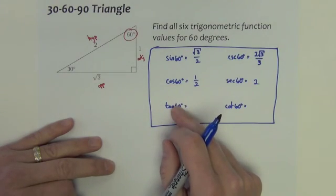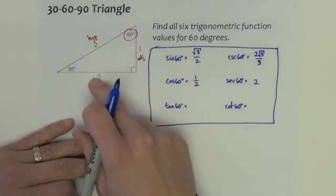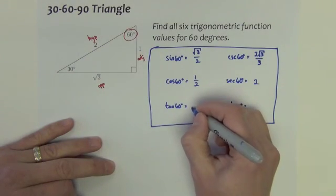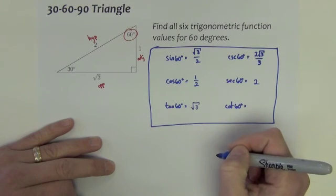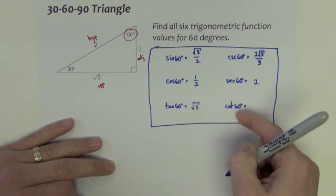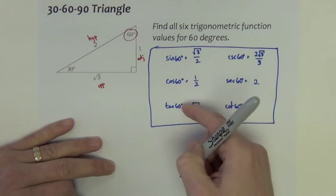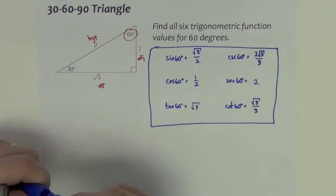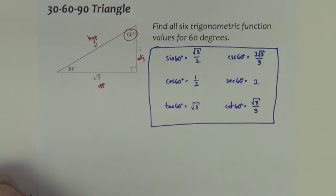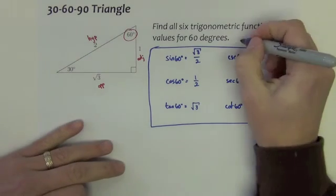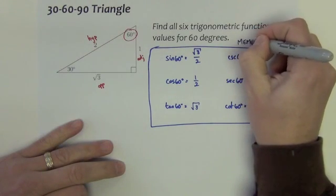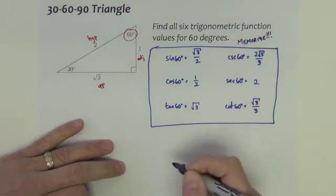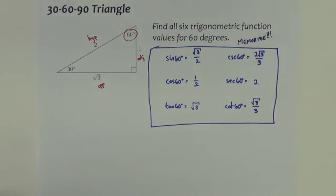The tangent is going to be opposite over adjacent. Square root of 3 divided by 1 is just square root of 3. The cotangent of 60 is the reciprocal of this one, which is work we did on the other slide. It's square root of 3 over 3. And yes, I'll write it just for emphasis. You'll probably get these memorized as well.